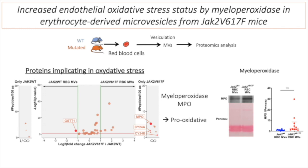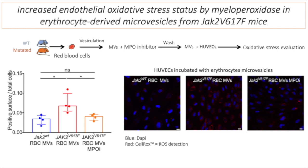To understand the underlying mechanisms, we performed proteomic analysis on microvesicles from JAK2 mutated and control erythrocytes. We looked at proteins involved in oxidative stress and discovered that myeloperoxidase expression, which is a strong pro-oxidant protein, was much higher in microvesicles derived from JAK2 mutated erythrocytes than in controls. We confirmed this by Western blot. To ascertain the role of myeloperoxidase, we performed direct and irreversible inhibition of myeloperoxidase on microvesicles derived from JAK2 mutated erythrocytes, shown in orange on the left panel, which completely reversed the increased endothelial oxidative stress.